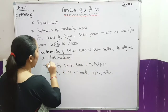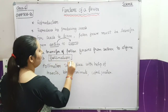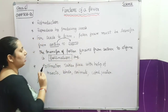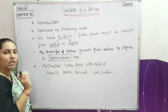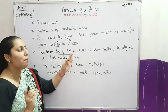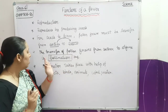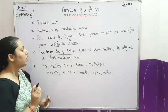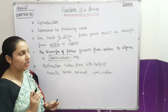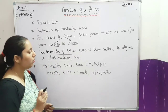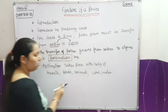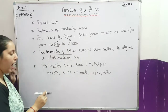Pollination is a very, very important term. It is the transfer of pollen grains from the anther to the stigma — that is known as pollination. I will show you in the picture how it happens.